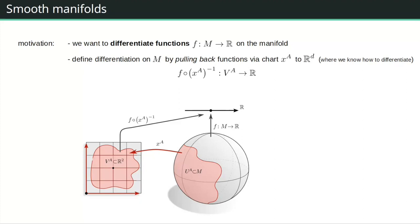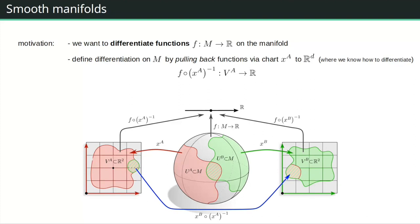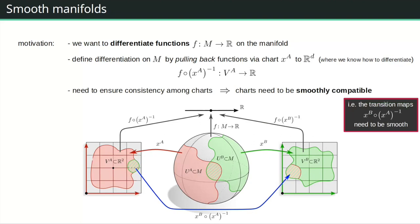If the manifold is globally topologically non-trivial, you have to cover it with multiple charts, and you have to guarantee that the notion of differentiation defined via one chart is compatible with another chart. We need consistency of differentiation among different charts. Two charts are smoothly compatible if the transition maps between them are smooth functions — smooth as functions between subsets of Euclidean spaces. Only if this is satisfied is your notion of differentiability on the manifold well defined.